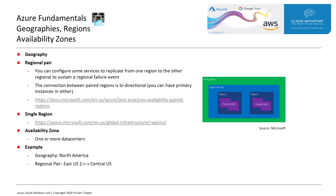In Azure, we have the concept of regions, paired regions, and geographies. The picture on the right shows this nicely. Two regions form a regional pair, and when we decide to replicate our data, we must replicate it to the paired region.